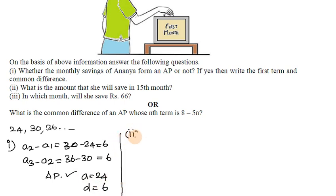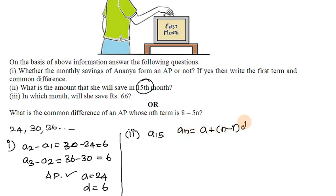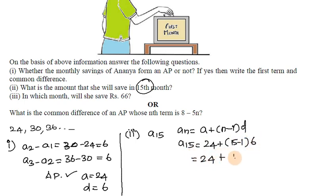Second subdivision: what is the amount she will save in the 15th month? For A15, using the An formula: An equals A plus (n minus 1) into d. So A15 equals 24 plus (15 minus 1) into 6, which equals 24 plus 84.